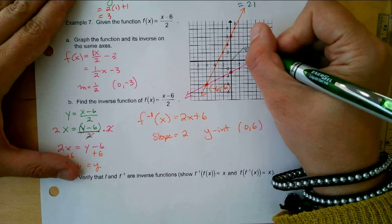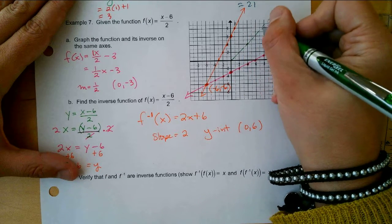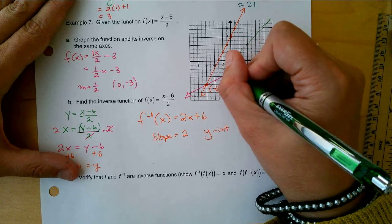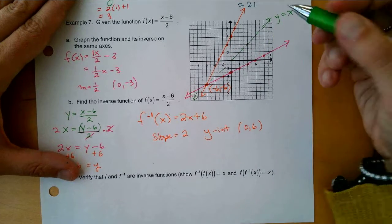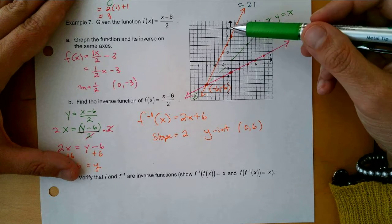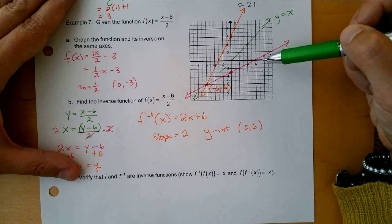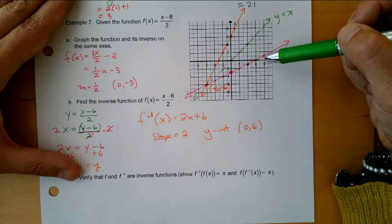...the line y equals x. So anyway, just showing that as well. Here's y equals x, and you can see that there's - what do we call that when we flip it over? - a reflection, that's right, reflection over the line y equals x.